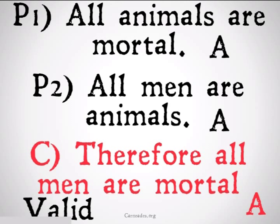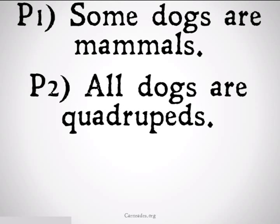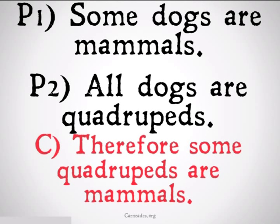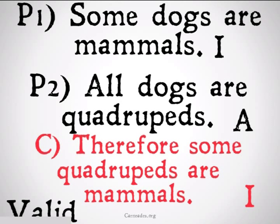Another example might be: some dogs are mammals, all dogs are quadrupeds, therefore some quadrupeds are mammals. This is an IAI categorical syllogism, and it's also going to be valid.